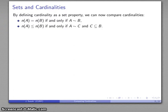Well, if they're not equal, one of them is greater, one of them is less, and so I might take a look at n(A), the cardinality of A, less than or equal to the cardinality of B, if and only if two things. A is similar to C, where C is a subset of B.